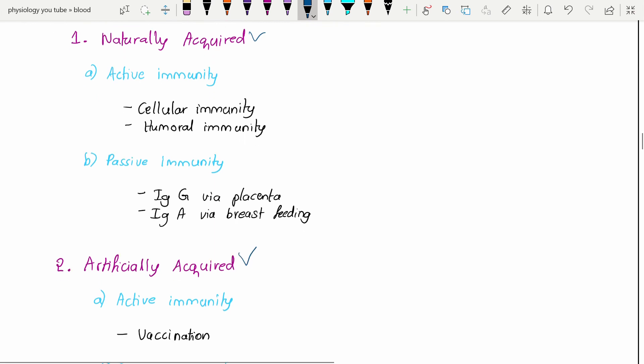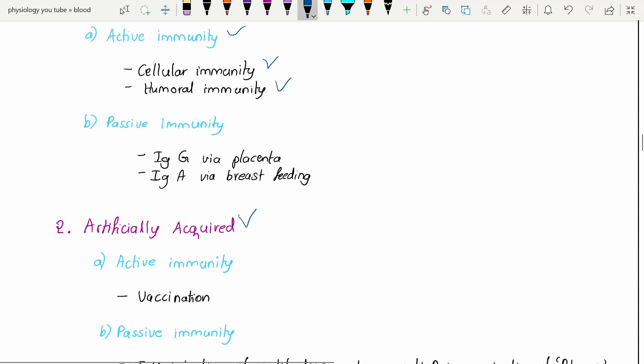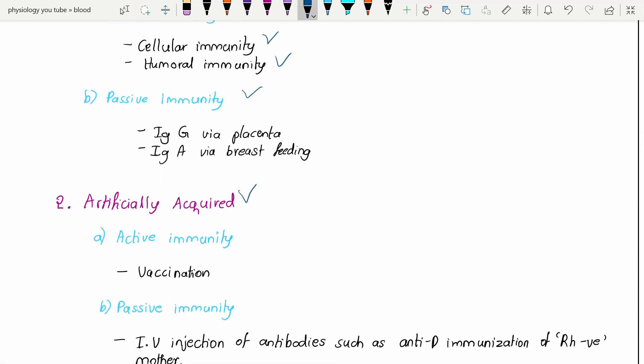In those, again active and passive immunities. In naturally acquired, the active immunities are cellular and humoral immunities, and the passive immunities we will get from our mother.